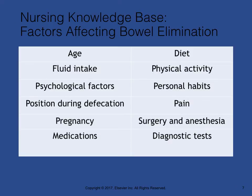Many factors affect bowel elimination. Knowledge of these factors helps to anticipate measures required to maintain a normal elimination pattern. Age influences bowel elimination — infants have a smaller stomach capacity, less secretion of digestive enzymes, and more rapid intestinal peristalsis. In contrast, older adults may have decreased chewing ability, causing peristalsis to decline and esophageal emptying to slow.